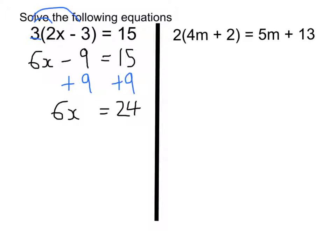When you've got the letter terms on one side, numbers on the other, we divide by the number in front of the letter. In this case, it's 6. 6x divided by 6 is x, and 24 divided by 6 is 4. So the answer is x is equal to 4.